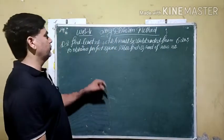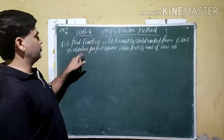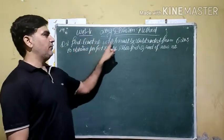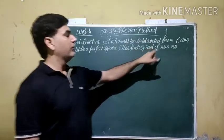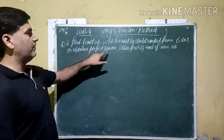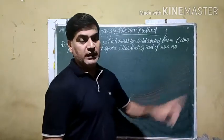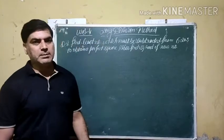In this lecture we are going to do question number two of worksheet number four. The question is: find the least number which must be subtracted from the given number 6203 to obtain a perfect square. Also find out the square root of the new number.